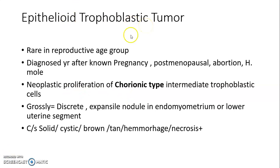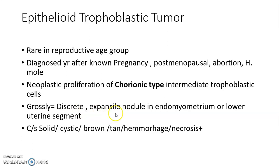Epithelioid trophoblastic tumor (ETT) is rare, occurring in reproductive age group, but can also be diagnosed in post-menopausal women and after known pregnancy, abortion, or in children in cases of raised HCG. In ETT, there is neoplastic proliferation of chorionic type intermediate trophoblastic cells. Grossly, the tumor is discrete, present as an expansile nodule in the endomyometrium or lower uterine segment. The cut surface is solid, may be cystic, brown to tan with areas of hemorrhage and necrosis.